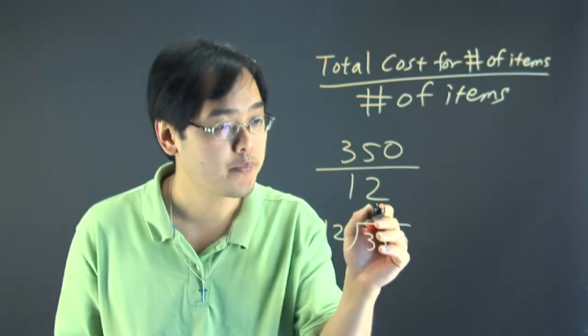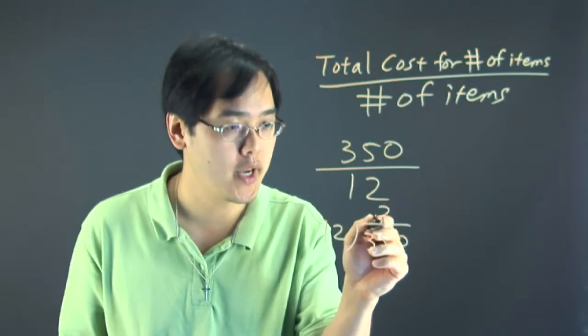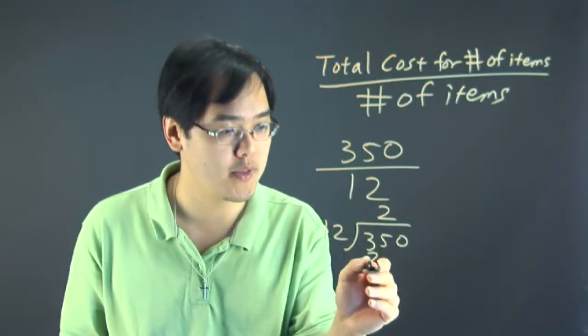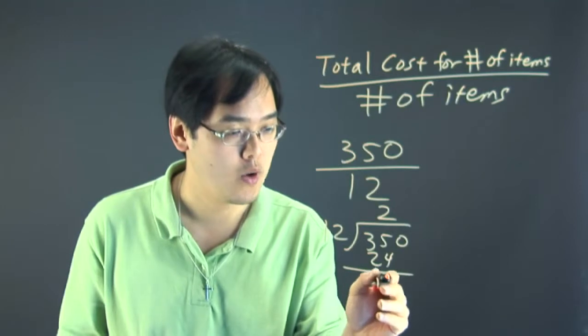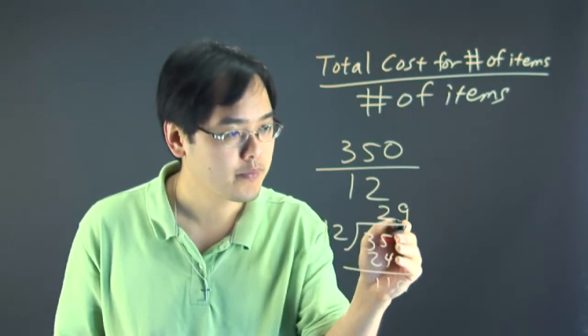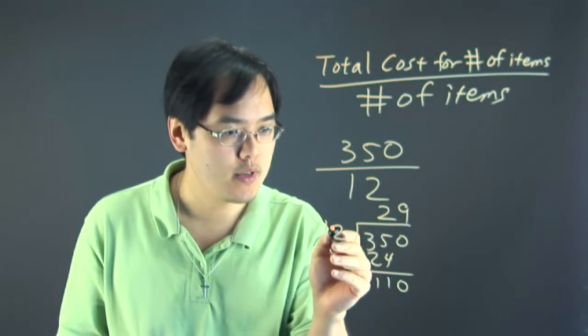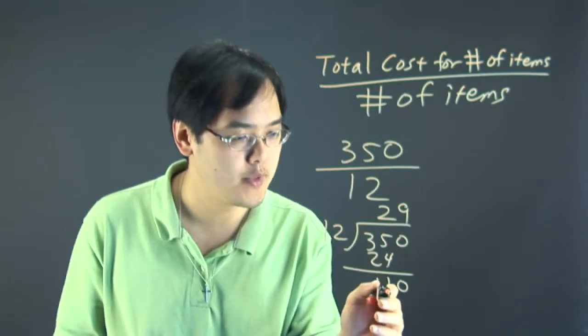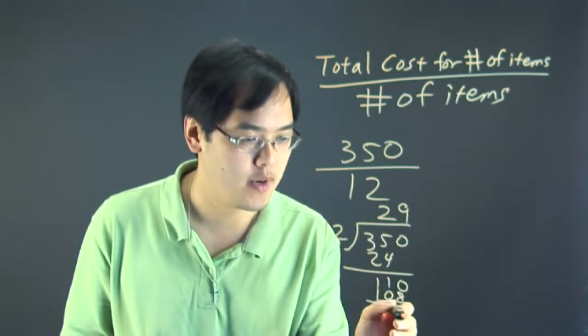So 12 goes into 35 almost three times, but not quite. It's really twice. 2 times 12 is going to give you 24 and then 110. Now 12 goes into 110, 9 times, 9 times 12, it's 108 with a remainder of 2.